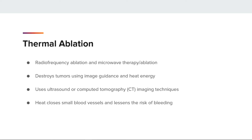Types of thermal ablation include radiofrequency ablation and microwave ablation. These treatments use image guidance and heat energy to destroy the tumor. Radiofrequency ablation uses high-frequency electrical current passed through an electrode in the needle that creates a small region of heat. Microwave ablation uses electromagnetic waves to create heat around the needle, also creating a small region of heat. This heat destroys the tumor, closes blood vessels, and lessens the risk of bleeding.